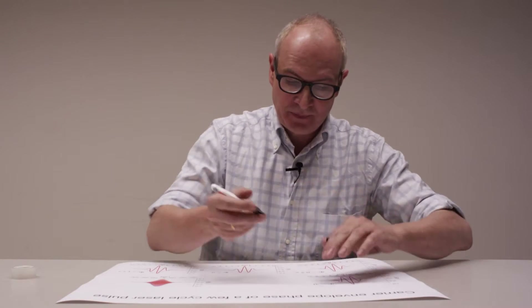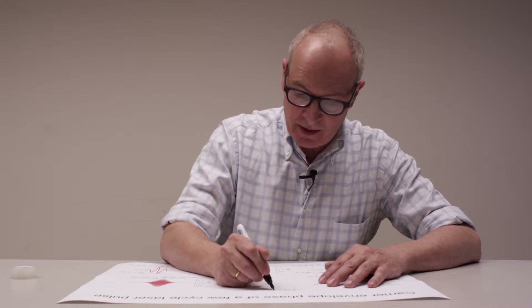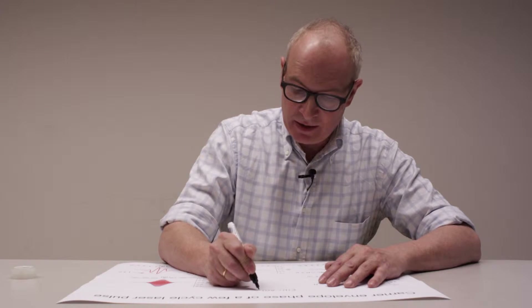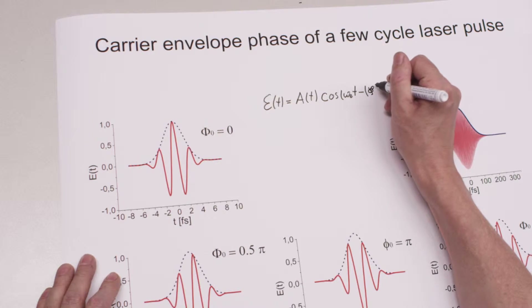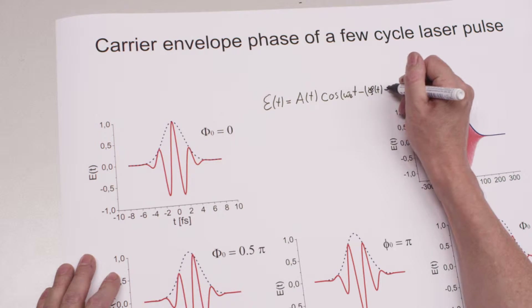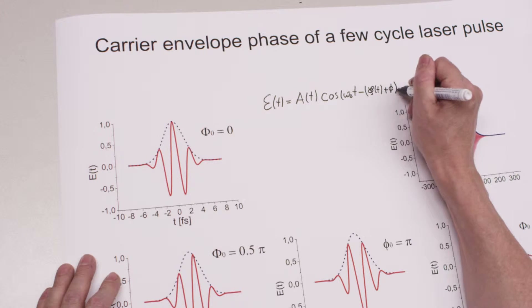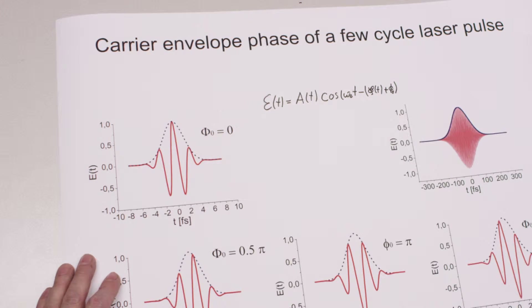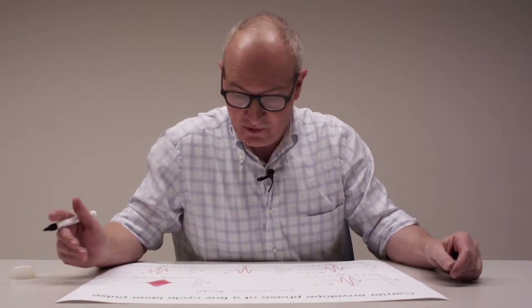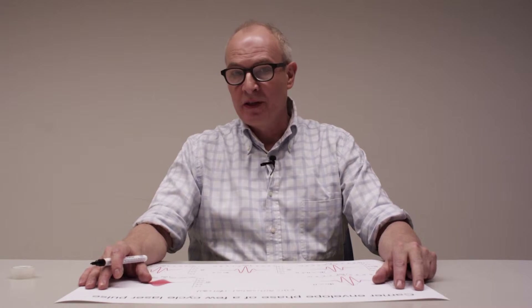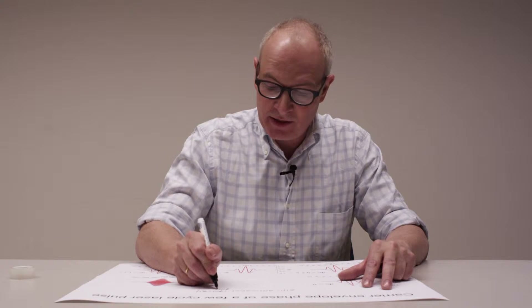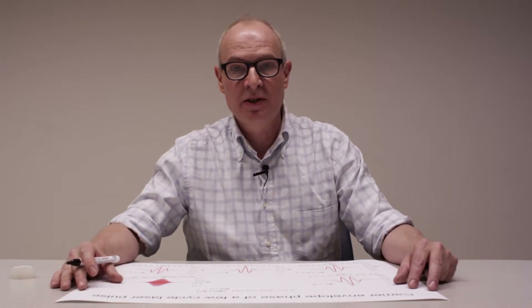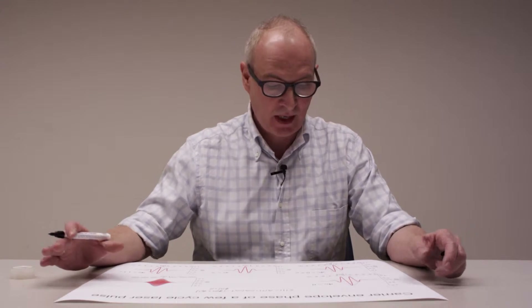The electric field of an ultra-short laser pulse equals the temporal amplitude function times the cosine of the carrier frequency times t, minus a time-dependent phase function, plus an offset phase. This offset phase is the Carrier Envelope Phase. For the sake of simplicity, we set the time-dependent phase to zero because we are discussing only bandwidth-limited pulses in this tutorial.